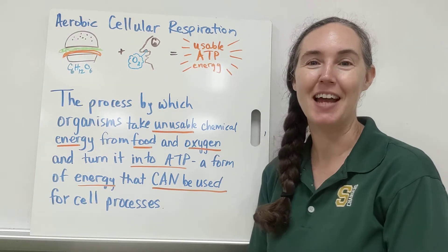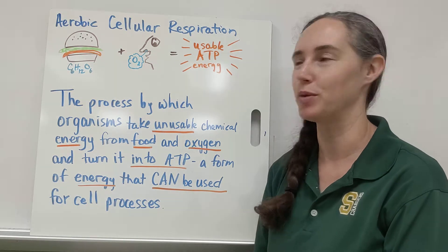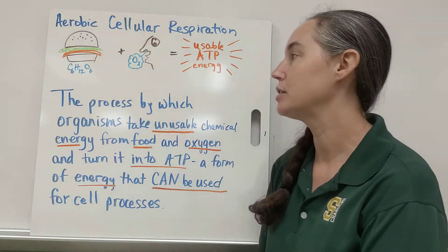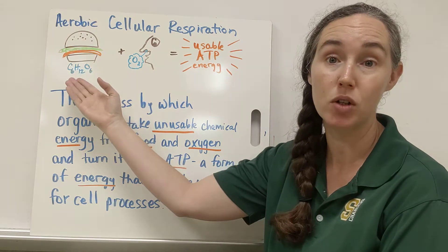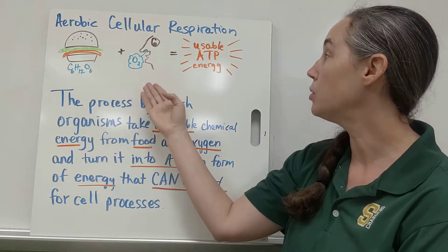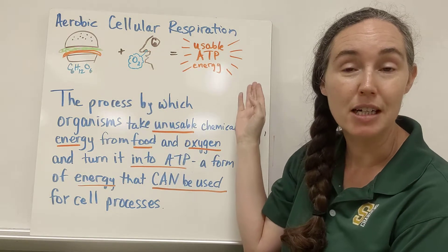Hi, it's Miss Parrot and this video is about the basics of aerobic cellular respiration. Aerobic cellular respiration is the process by which organisms take unusable chemical energy from food and combine it with oxygen to make usable energy to power cells' processes called ATP.